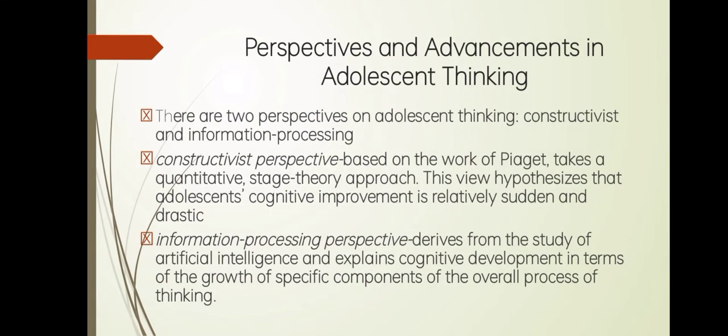Next, perspectives and advancements in adolescent thinking. There are two perspectives on adolescent thinking: constructivist and information processing. The constructivist perspective, based on the work of Piaget, takes a quantitative stage theory approach and hypothesizes that adolescent cognitive improvement is relatively sudden and drastic. The information processing perspective derives from the study of artificial intelligence and explains cognitive development in terms of growth of specific components of the overall process of thinking.